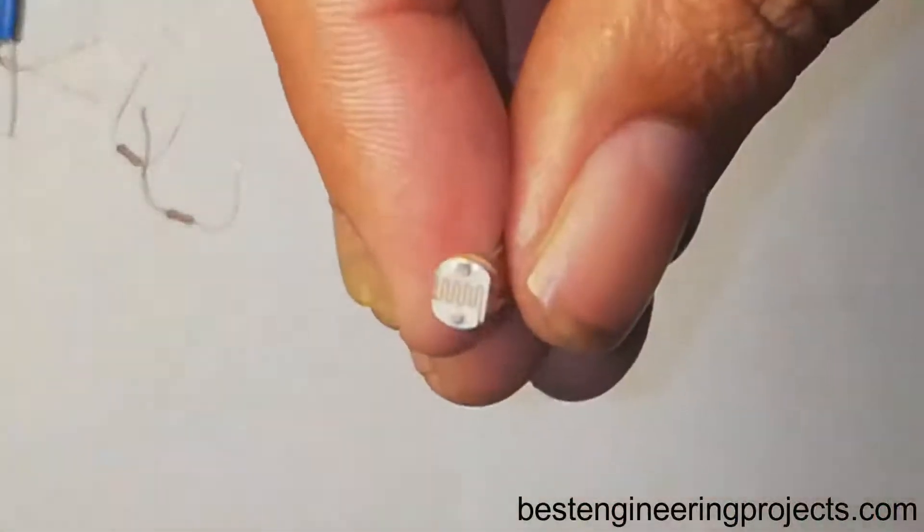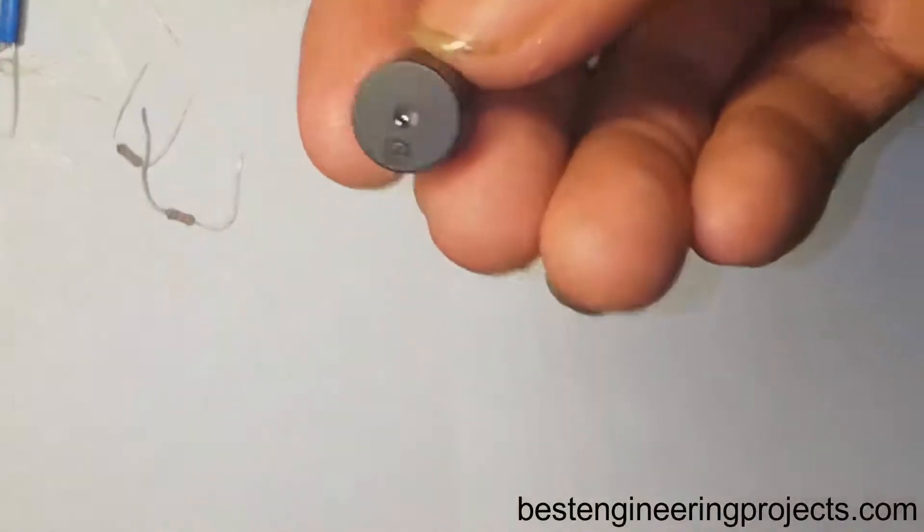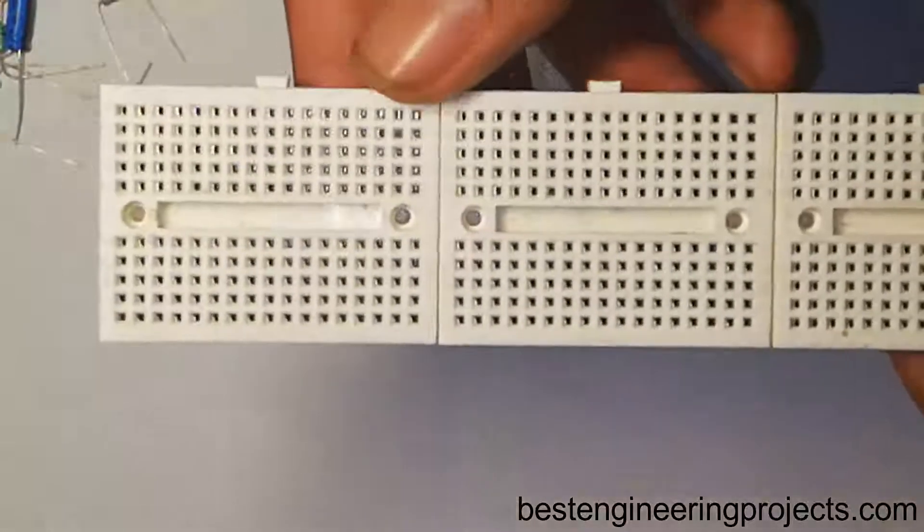One LDR, one any color LED, and a piezo buzzer. For verification I'm using a breadboard. These are the components required for the project automatic fence lightning circuit with alarm.